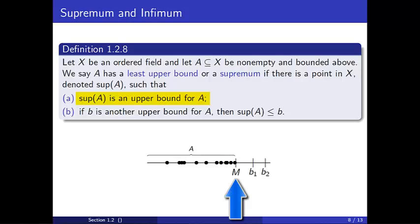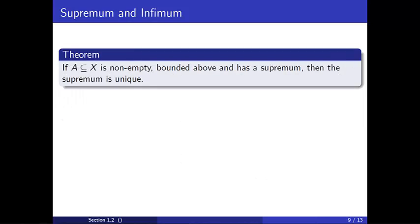Notice that M is an upper bound for A, and M is less than or equal to all other upper bounds. I like to remark here that if the supremum of a set exists, then it is unique. You'll prove this fact in homework.